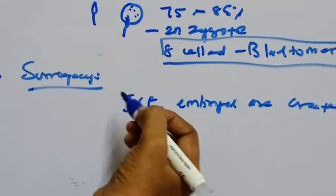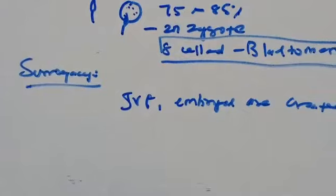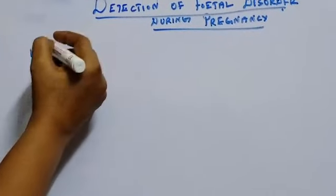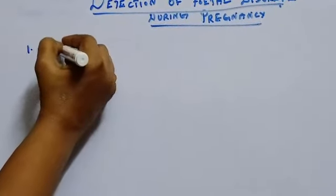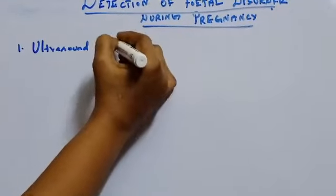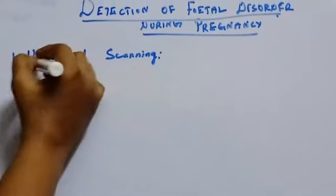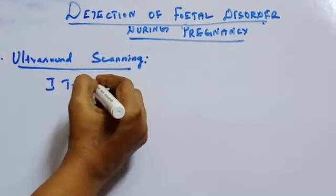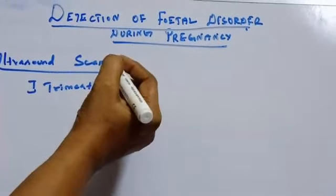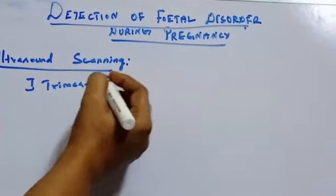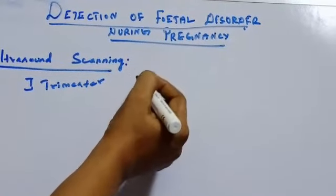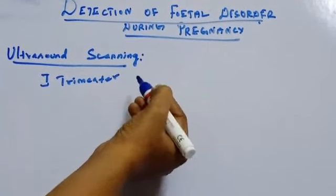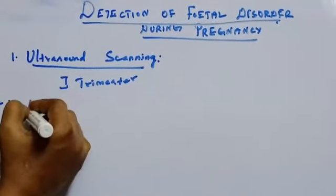Next, we will see detection of fetal disorders during early pregnancy. The first method is ultrasound scanning. Ultrasound scanning is usually performed in the first trimester to determine the number of fetuses and for assessment of early pregnancy complications.